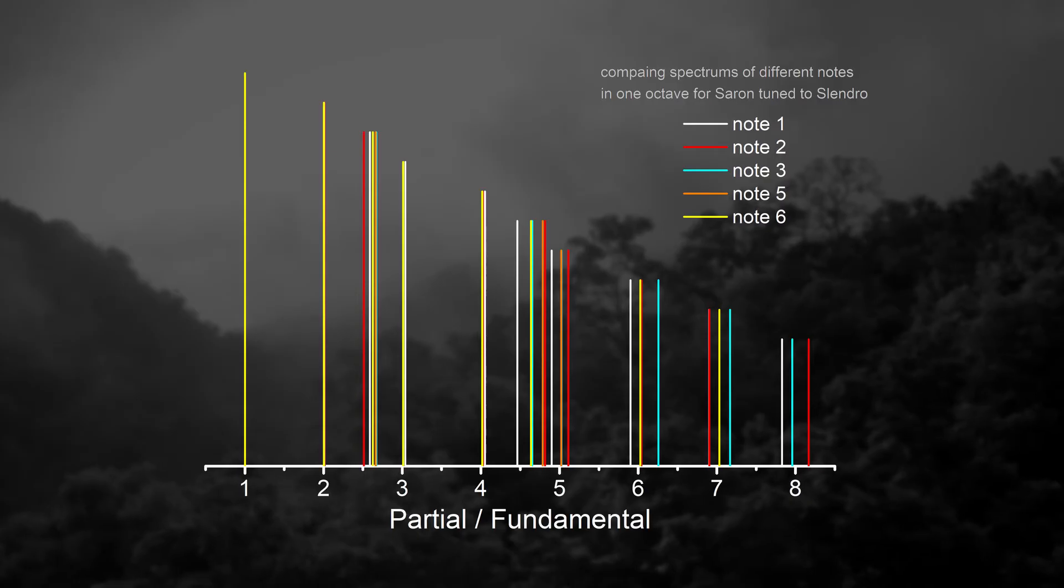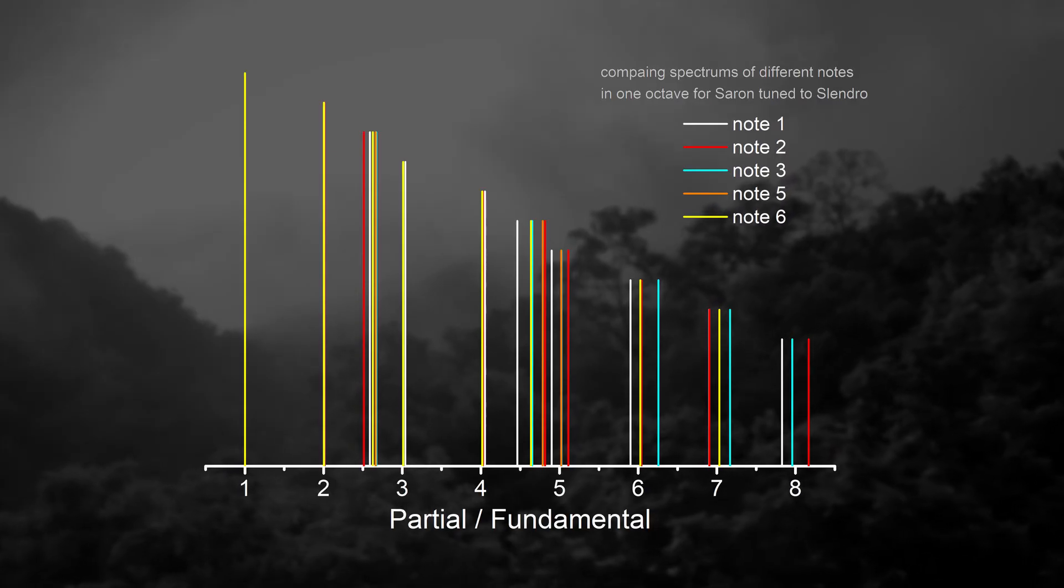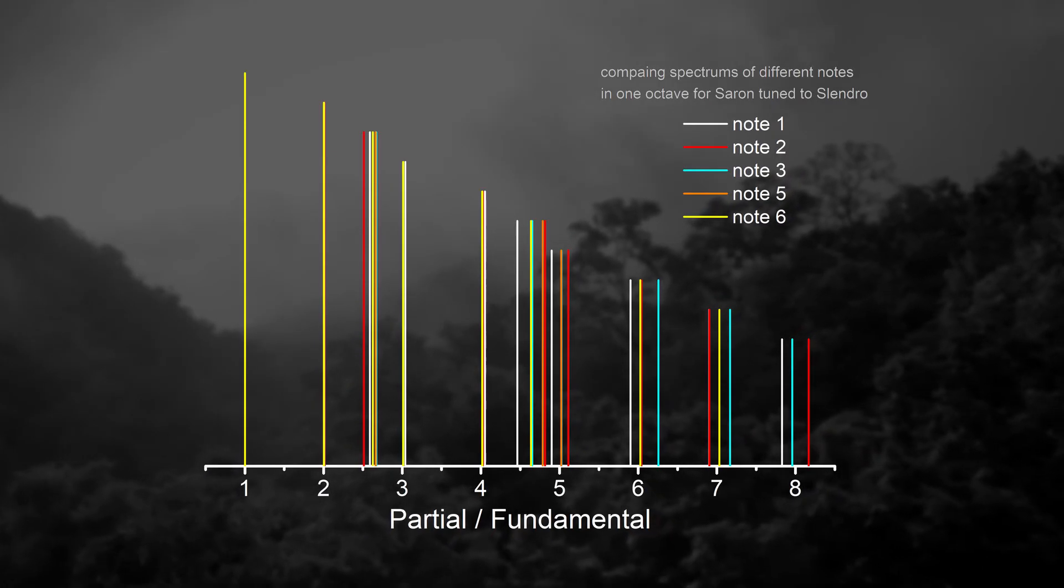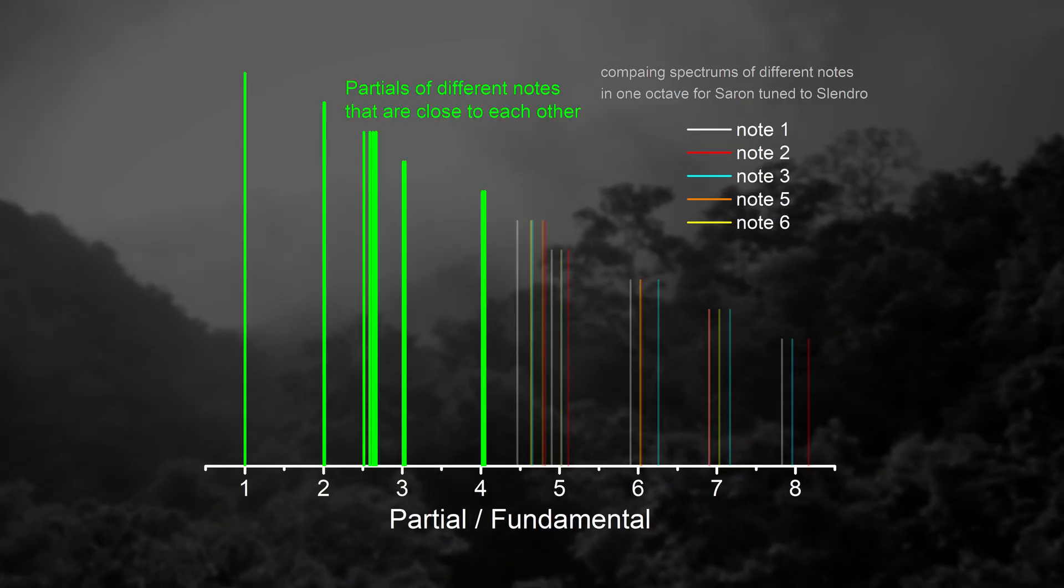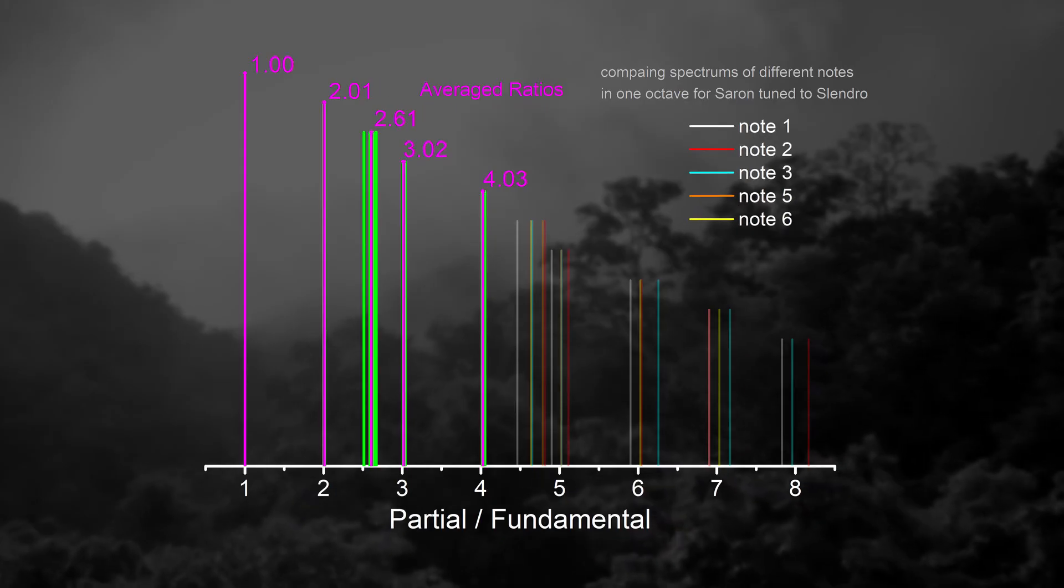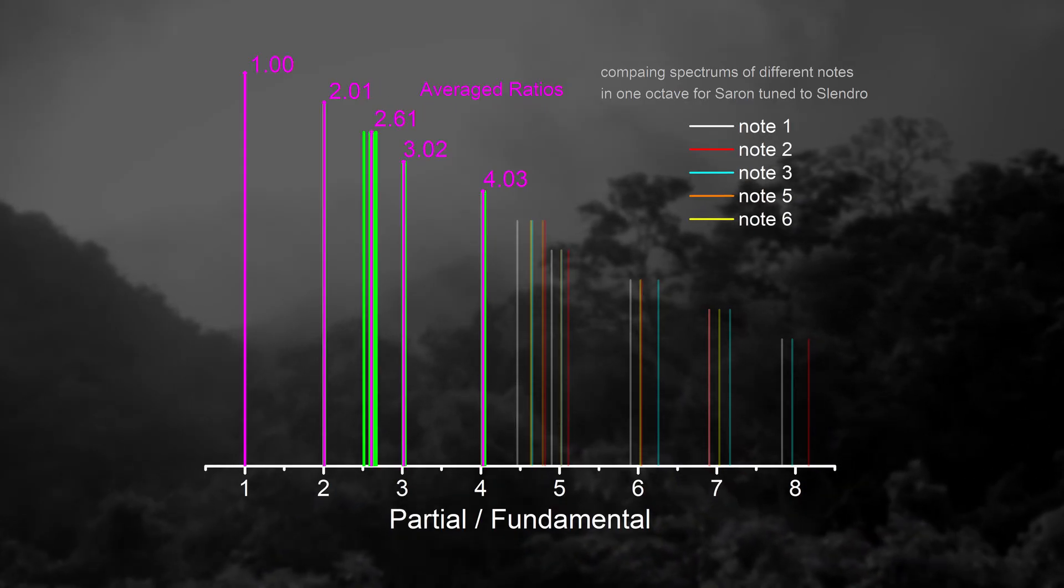To find typical spectrum of a Gamelan instrument, let's limit ourselves to a middle register and measure spectrum of every note in the octave for Saron. We see that indeed, there is a variation in spectrum of notes, but some partials can be identified as close enough. Let's take such partials and average their ratios. This way we find typical Saron spectrum.